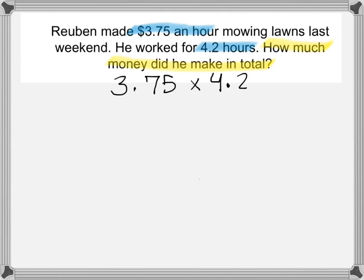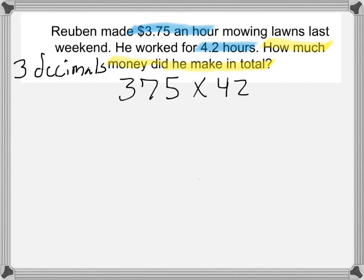So, what are we going to multiply? We are going to multiply 3 and 75 hundredths — that came from the $3.75 — times 4 and 2 tenths. When you're multiplying numbers with decimal places, digits behind the decimal point, the first thing you need to do is count just how many places you have behind the decimal point between your two numbers. So, 3 and 75 hundredths has two places behind the decimal point, and 4 and 2 tenths has one place — so together I have three decimal places. That will come in handy later. Now I can just multiply 375 times 42.